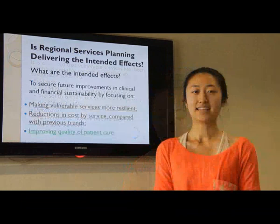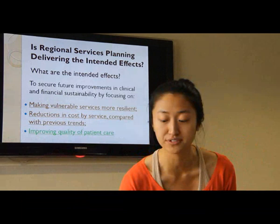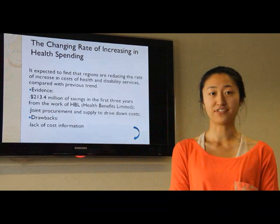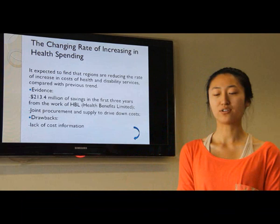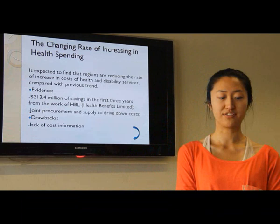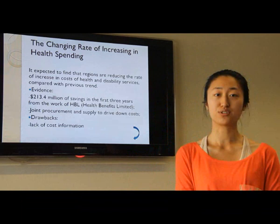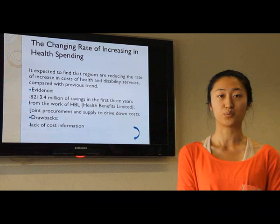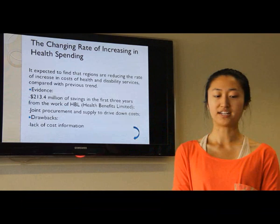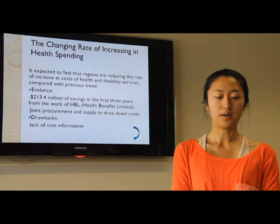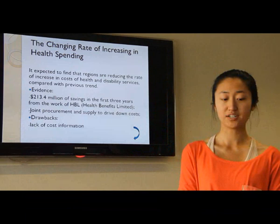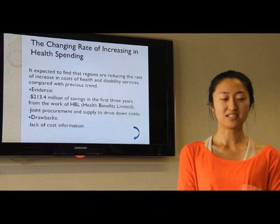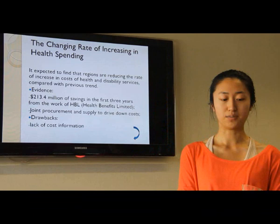The second focus is to achieve reductions in the rate of cost increases compared to previous trends. A good amount of savings has been achieved by Health Benefits Limited (HBL), which was set up to work with the health system to achieve savings by reducing administration and support costs such as banking services, insurance, and information technology. Regional shared services also used joint procurement and supply to drive down costs, which did work. However, there is still a lack of cost information, and regional services find it hard to get proper data and properly attribute costs. At the same time, productivity and throughput are increasing as costs increase, making it important to find the balancing point. Accountability is a big issue here, and the best solution would be a well-developed information system, which is what regions are currently working on.